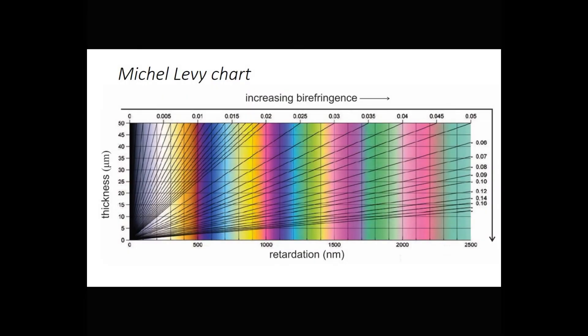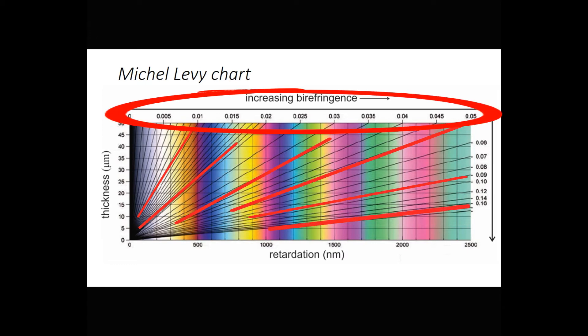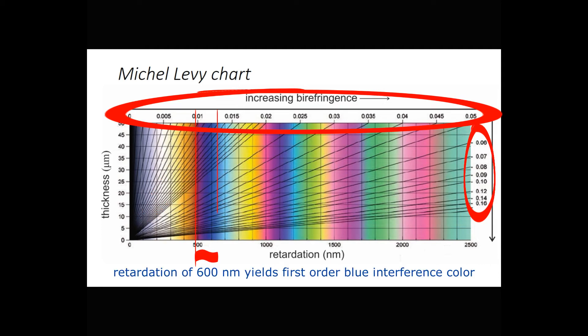This chart, called the Michel-Levy chart, shows the same information as the previous chart, but the axes have been changed. Retardation is across the bottom. Thickness is vertical. The Michel-Levy chart is more commonly used by mineralogists and petrologists than the Wraith-Sorenson chart we just looked at. The diagonal lines here are lines of equal birefringence, and the values of birefringence are written across the top and down the right-hand side of the chart. The advantage using this kind of chart is color swatches are vertical, corresponding to different values of retardation.